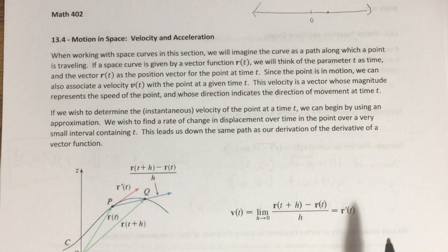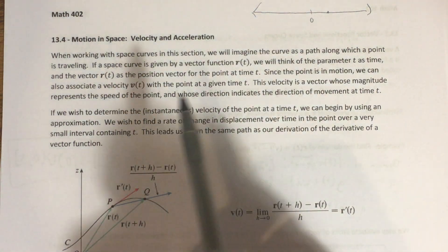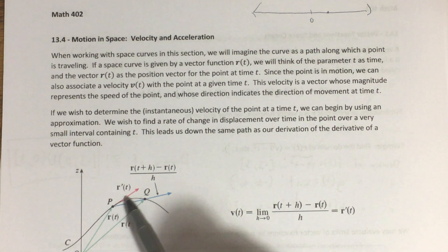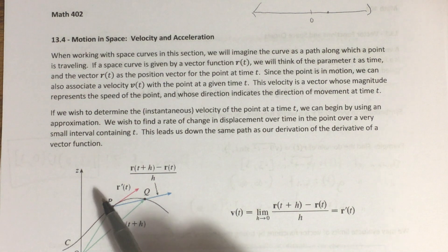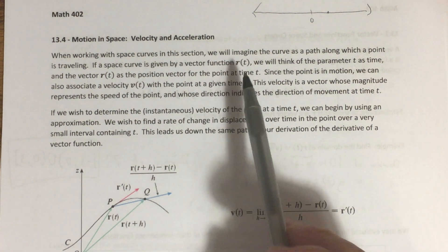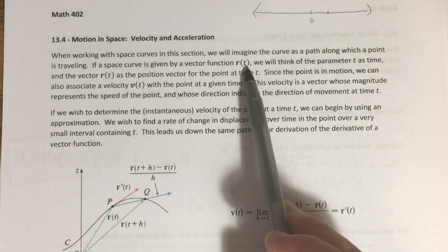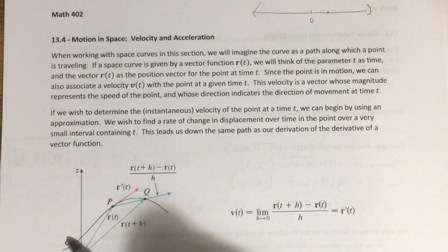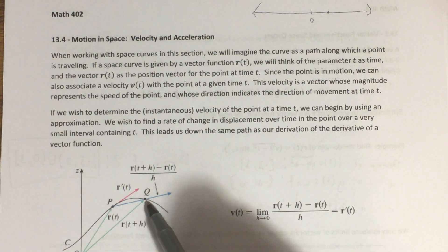So throughout this section, anytime we're working with a space curve given by some vector function R of T, we're going to imagine that space curve as a path. Namely, it's going to be a path that a point or a particle is moving along. And if the function R of T gives us that space curve, we're going to think of T as representing time. So at any given time that I plug into my position function, it will give the position of that point or that particle at time T.